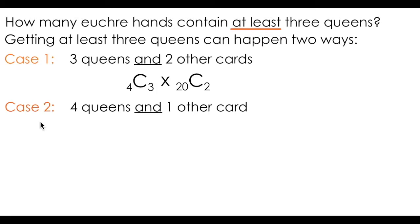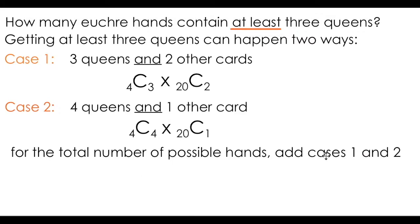So this expression here should tell me the total number of ways I can get three queens and two other cards. But remember, that's just one case. We also need to consider the second case, where I had four queens and one other card. Using similar logic to case one, you should be able to see that four choose four times twenty choose one will give me the number of possible ways I can have four queens and one other card. So if I have two cases where I can get at least three queens, and I add those two cases together, I should get the total number of possible ways I can get at least three queens. I'm going to leave my answer in this form, as this is the best way to represent all the thinking that went on in this problem.